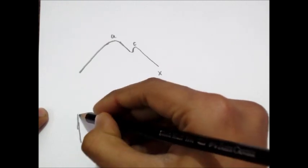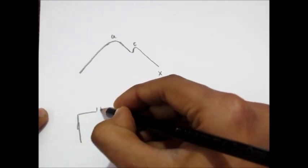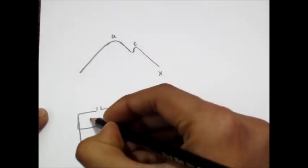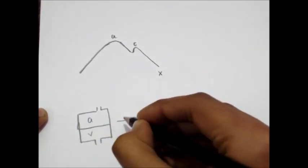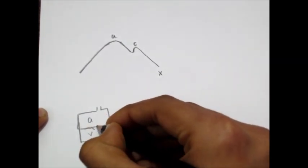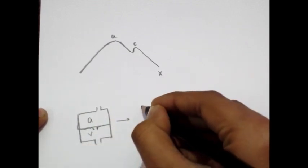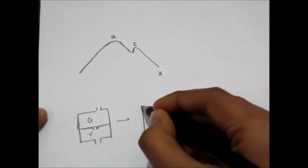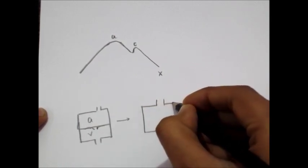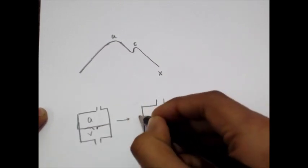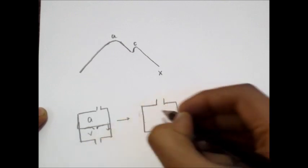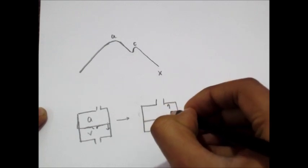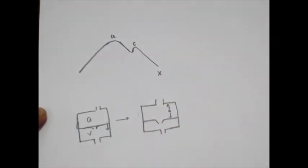Let's say this is the right-sided chamber of our heart — this is the atrium and this is the ventricle. When the ventricle contracts, it becomes smaller but also pulls down this fibrocartilaginous ring, making the atrium a bit larger.